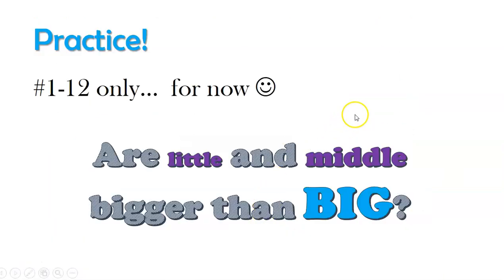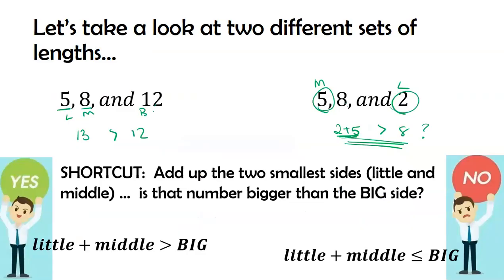I want you to head into Schoology and practice telling me, can these three side lengths create a triangle? Yes or no. There are no maybe so's. It's either yes or no. Little and middle have to be bigger than big. Not the same. Bigger. See you in Schoology.